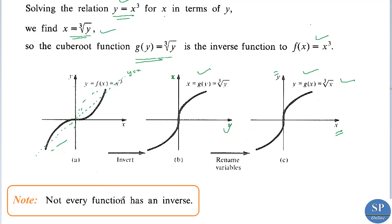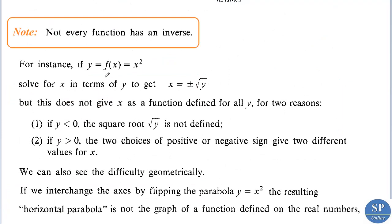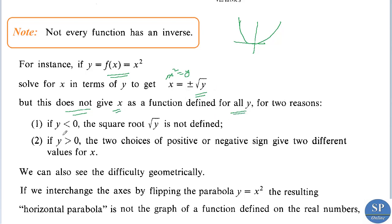Not every function has an inverse. For example, consider f of x equal to x squared. We know the graph of this function is a parabola. If we try to find the inverse, we get x squared equal to y, which gives x equal to plus or minus square root of y. But this does not give x as a function defined for all y, because if we take y less than 0 then square root of y is not defined.